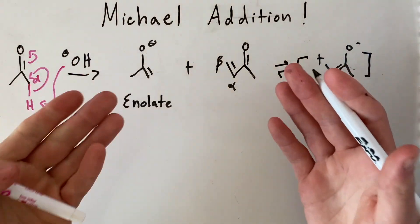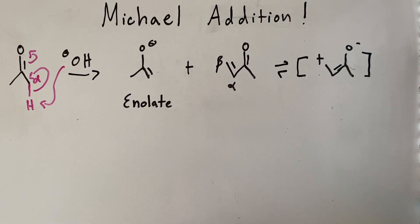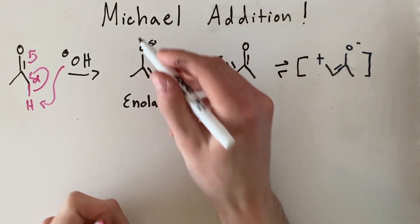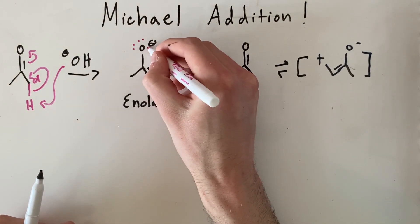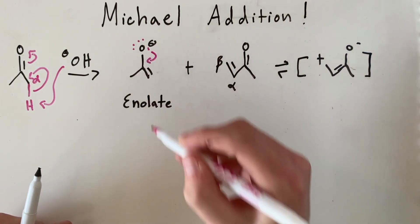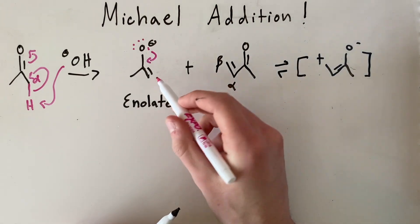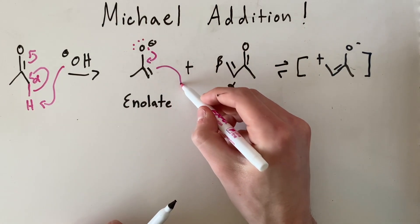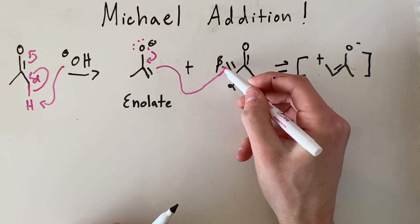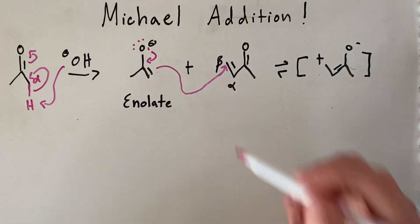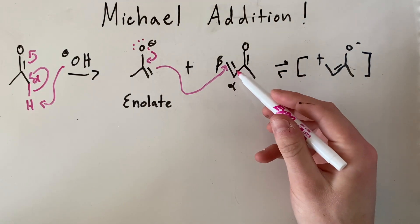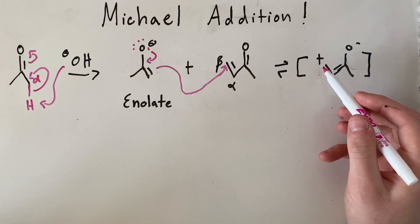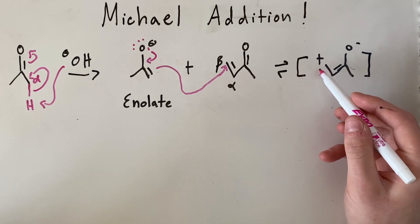When we combine the two molecules in solution, what we're going to have is these electrons from the oxygen come down to form the ketone bond. And these electrons here will actually go and attack that beta carbon. So the beta carbon is the electrophile because in its resonance structure there exists a positive charge.